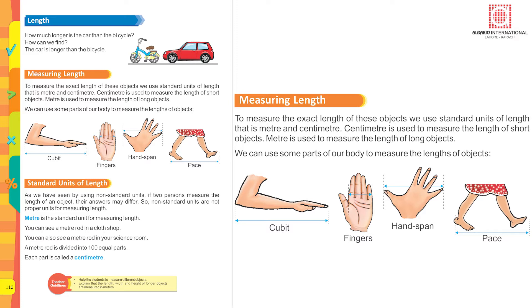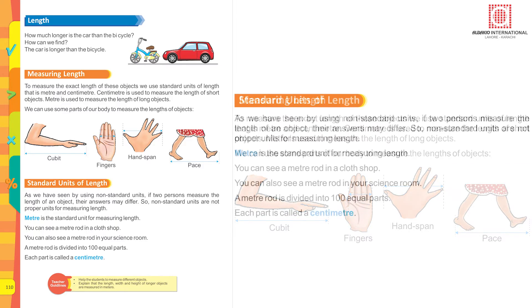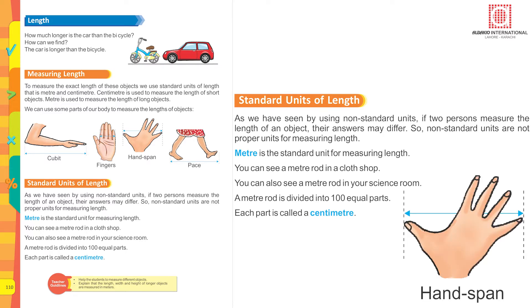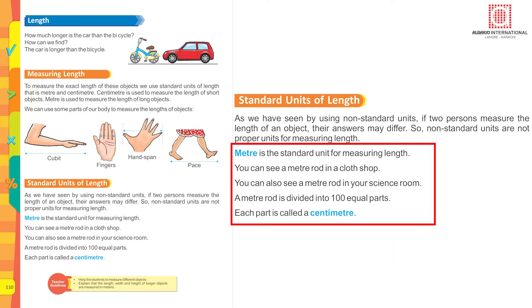The standard units of length are meter and centimeter. Centimeter is used to measure short objects and meter is used to measure long objects. Non-standard units include the cubit (elbow to fingertip), hand span, and pace. If two persons measure with non-standard units their answers may differ — a bigger hand gives a bigger hand span, and the same applies to pace and cubit.